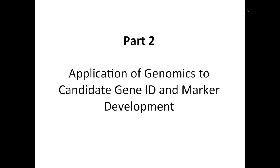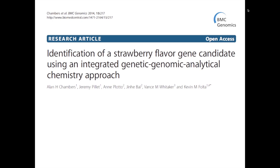Let me move on to Part 2: application of genomics to candidate gene identification and marker development. This is the strategy where we look at candidate genes for certain traits and hope to move from candidate gene to a robust molecular marker that can be used in breeding. This work has also been published, just recently in BMC Genomics, with Alan as primary researcher and first author. In this work, we looked at a gene involved in flavor, particularly for a volatile compound.